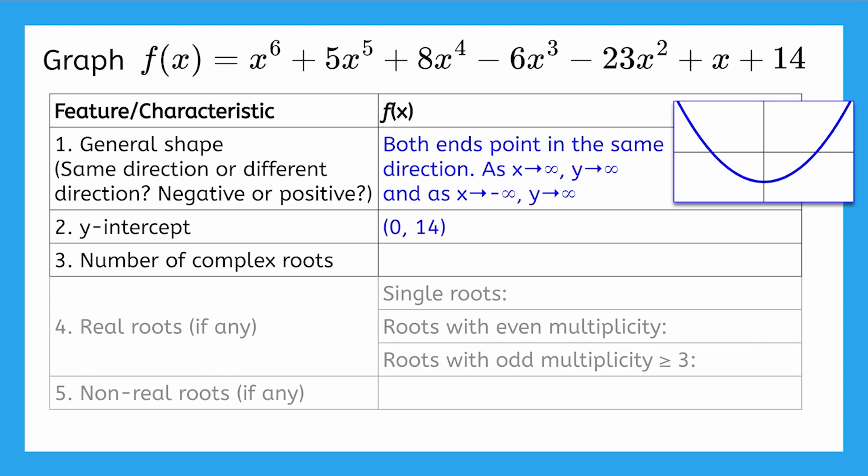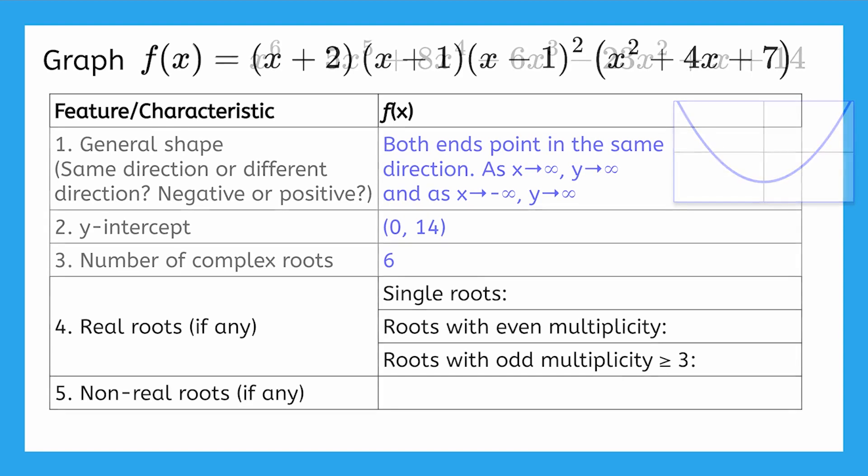And the fundamental theorem of algebra gives us the answer for line 3. The function has a degree of 6, so there will be 6 complex roots. Great! This is just about all we can tell about the function from its non-factored form. Let's look at it in its factored form. Sometimes you'll need to factor the function on your own, but here we've factored it for you so that we can focus on lines 4 and 5.